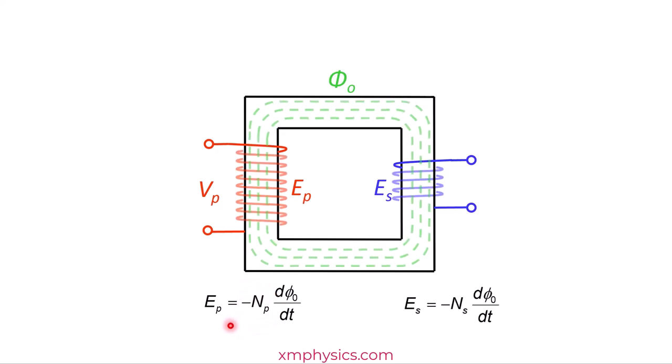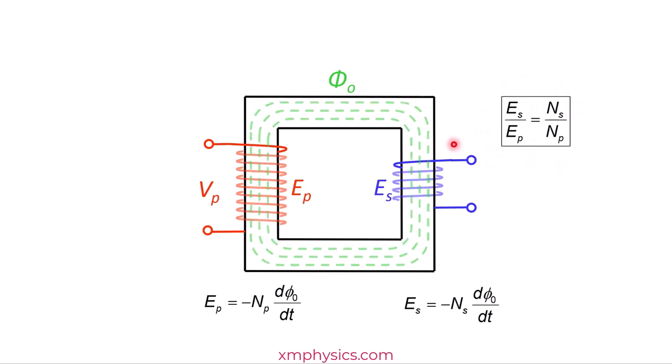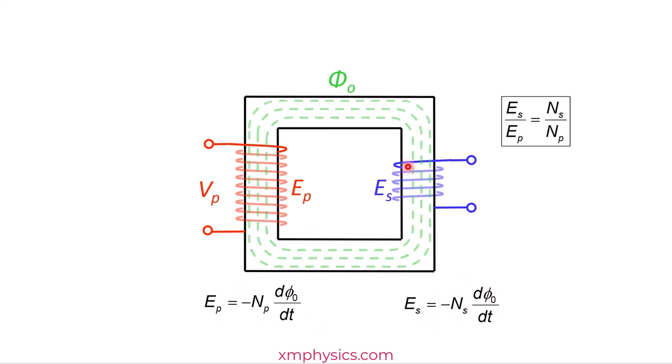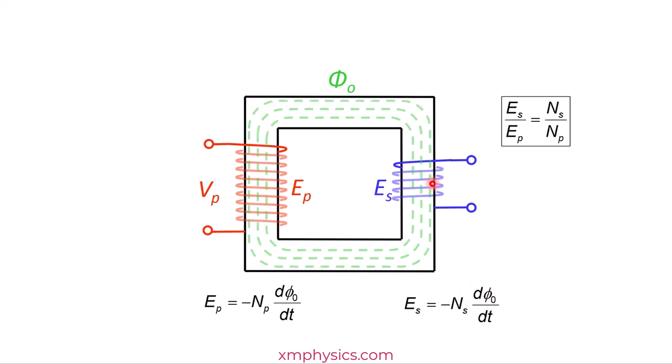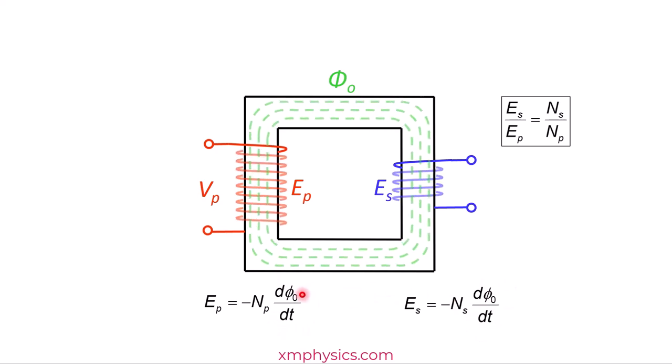Now you look at this equation and you look at this equation. What do you want to do with them? Divide them, right? And ta-da! You get the induced EMF follows the turn ratio. Now do you appreciate that having no flux leakage actually simplifies our analysis a lot? Because there's no flux leakage, the primary coil and the secondary coil experience the same exact changing magnetic flux. So the d phi dt and the d phi dt here are exactly the same. That allows us to cancel these two neatly when we divide these two equations.